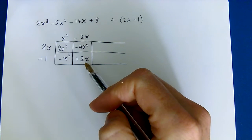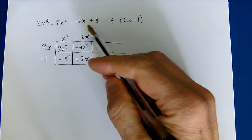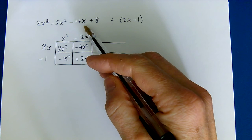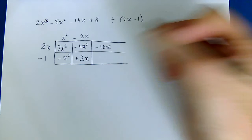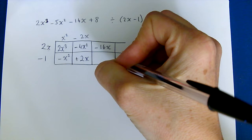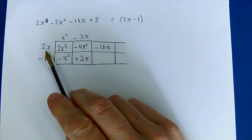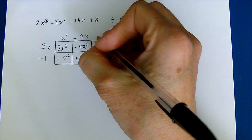Okay, we don't want plus 2x, we want to take away 14x, so we need an extra take away 16x and now we can think, well what do we multiply 2x by to make negative 16x?